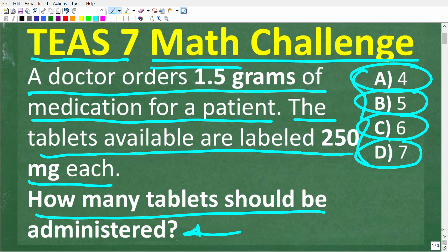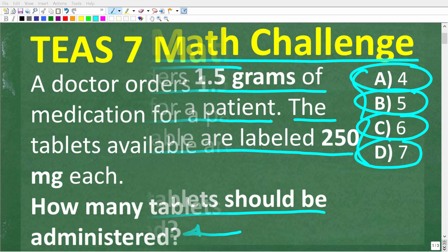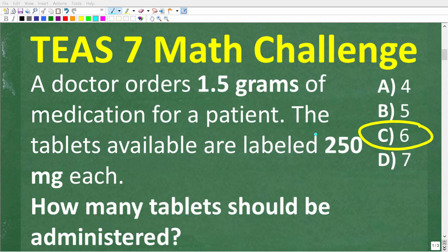So once again, a doctor orders 1.5 grams of medication for a patient. The tablets available are 250 milligrams each. How many tablets should be administered? The correct answer is C, 6 tablets. If you got this right, that's fantastic, but remember there is a lot of math you need to know on the TEAS exam, including algebra and geometry.